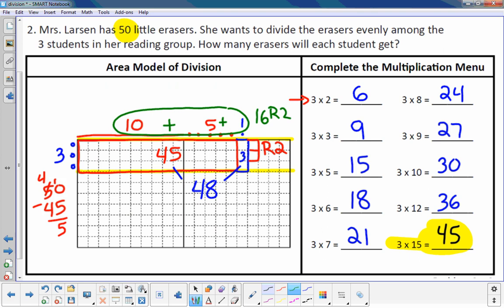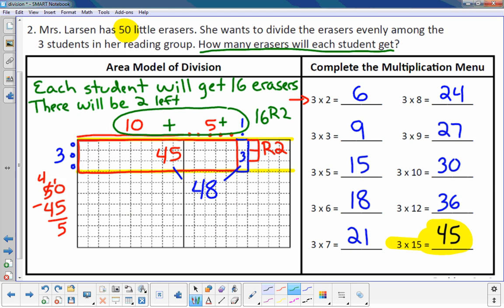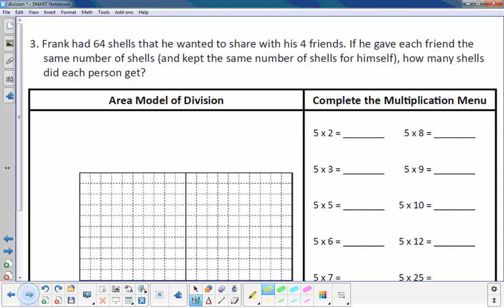But is that the answer to the question? How many erasers will each student get? Each student is going to get 16. Each student will get 16 erasers. There will be 2 left. All right. Let's try one more.